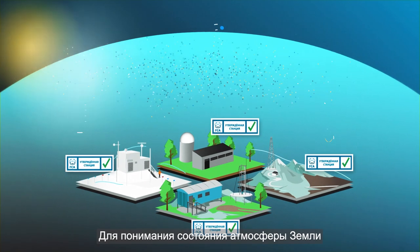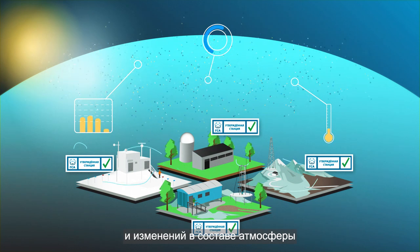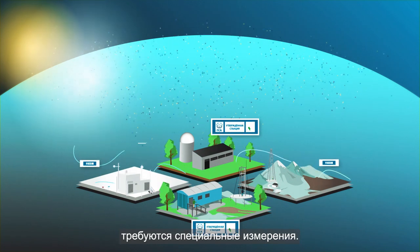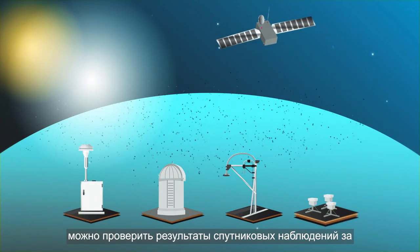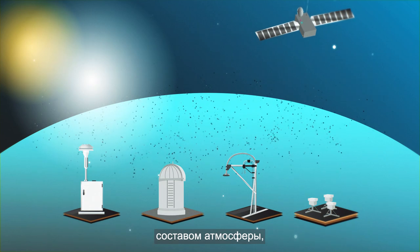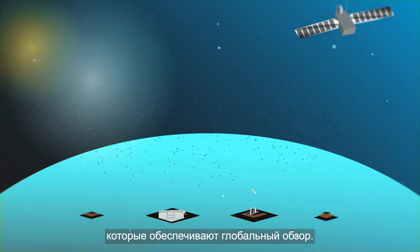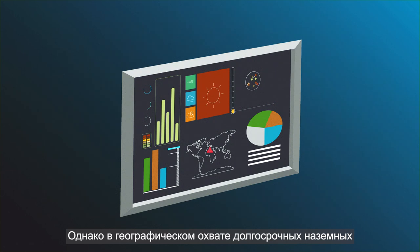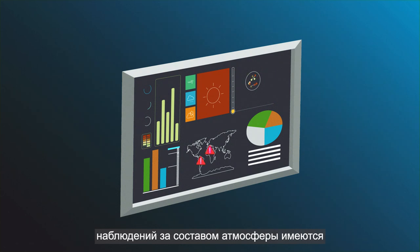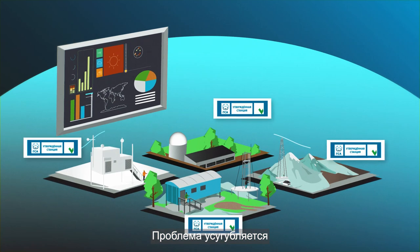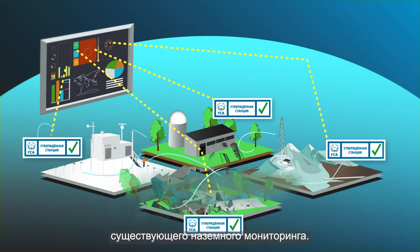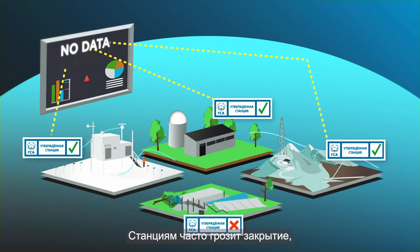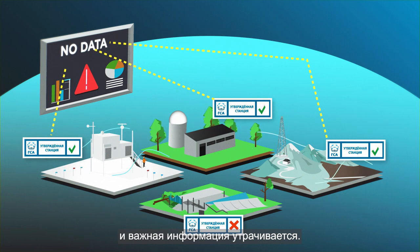Understanding the state of Earth's atmosphere and the changes in atmospheric composition requires dedicated measurements. Ground-based observations are the only way to verify satellite observations of atmospheric composition that provide a global overview. However, there are big gaps in the geographical coverage of long-term ground-based atmospheric composition observations, exacerbated by insufficient funding and support for existing ground-based monitoring. Stations frequently face closure and important information is lost.